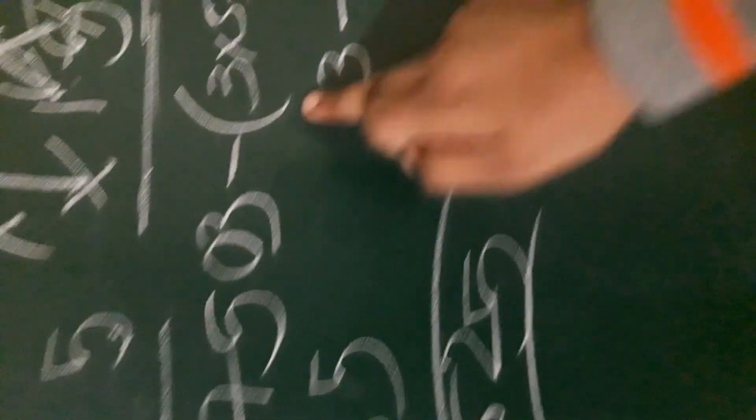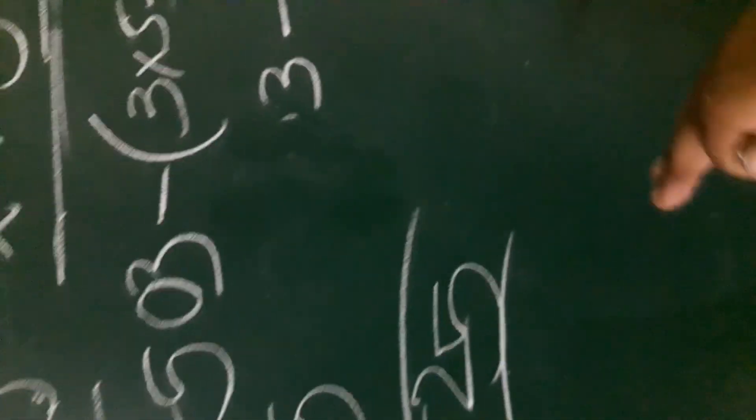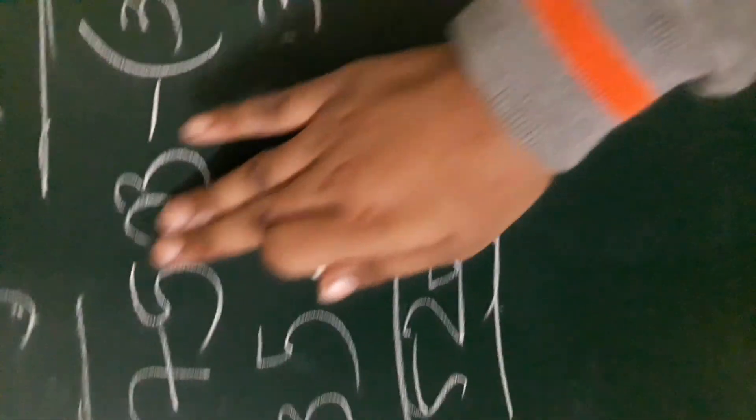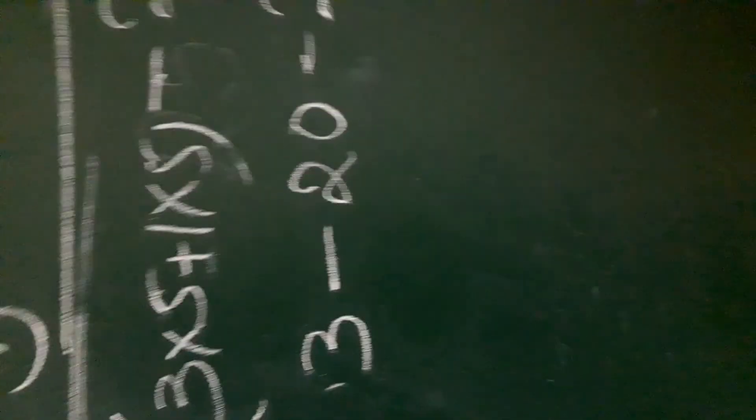So, 3 into 5 is 15. So, 15 plus 5 is 20. Now, I am going to add 2 into 5.